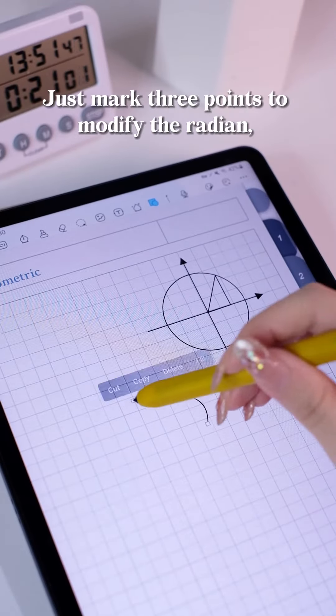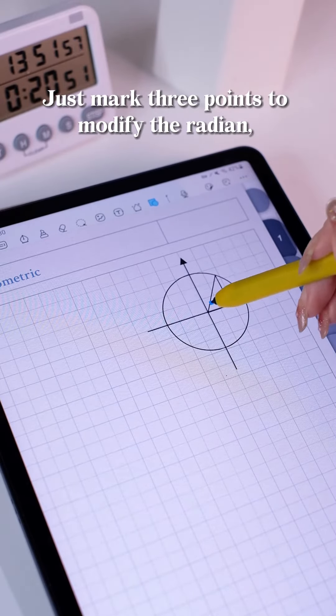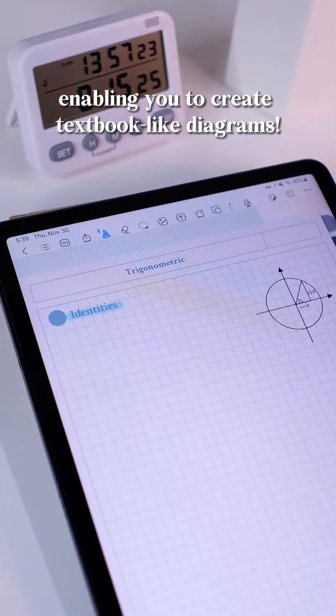Need to sketch curves? Just mark three points to modify the radian, enabling you to create textbook-like diagrams.